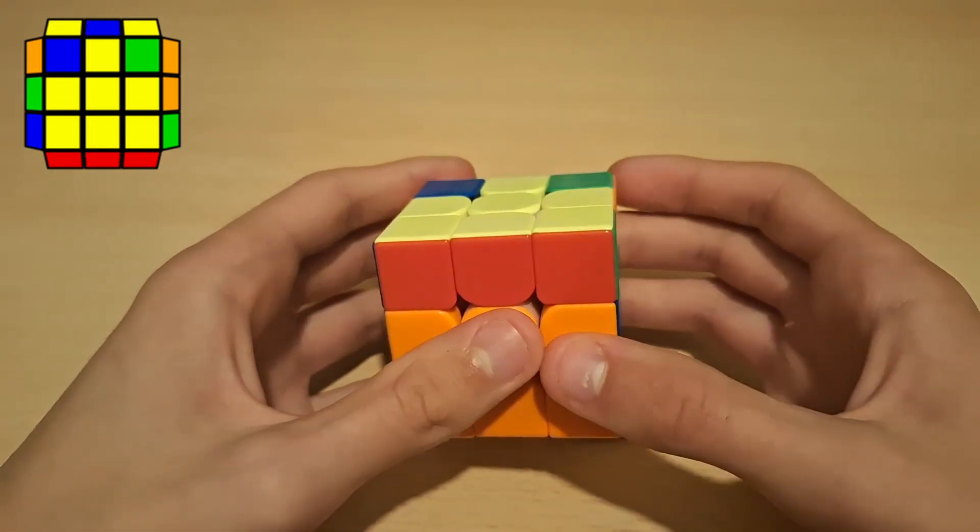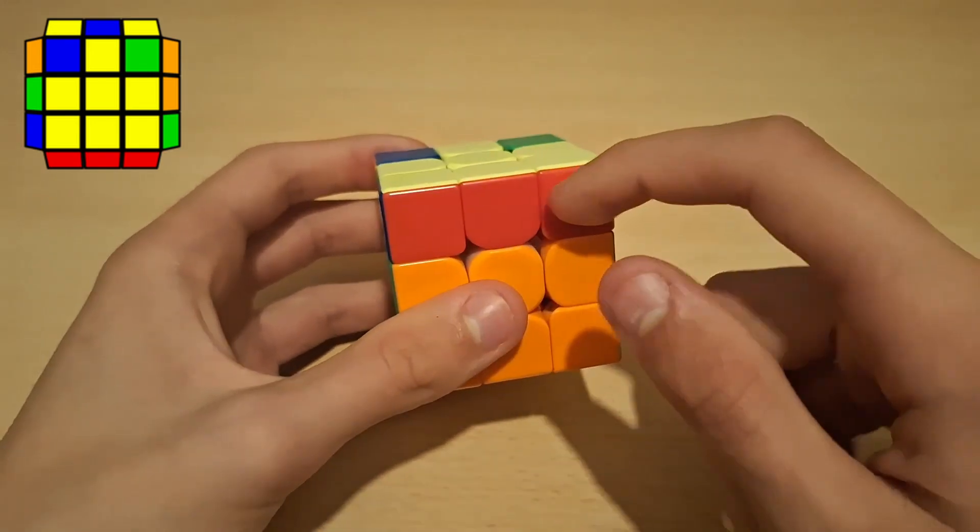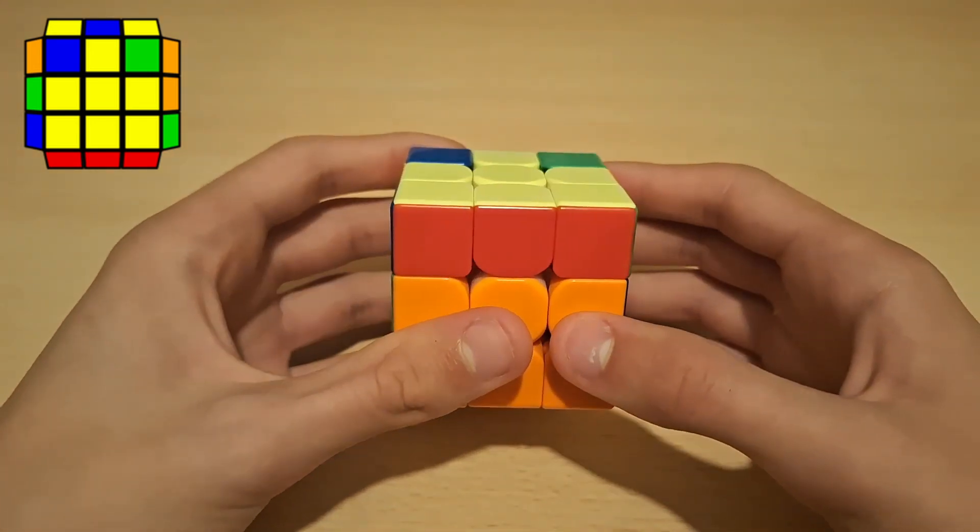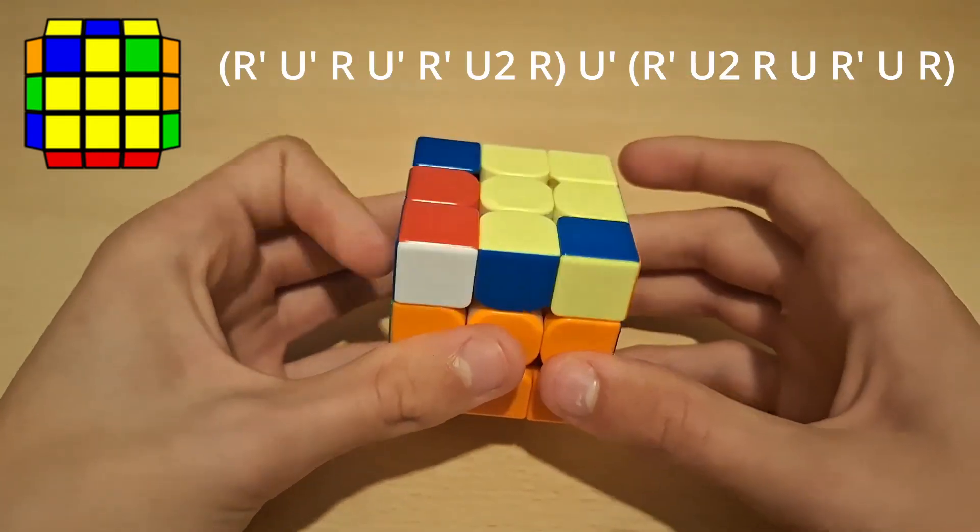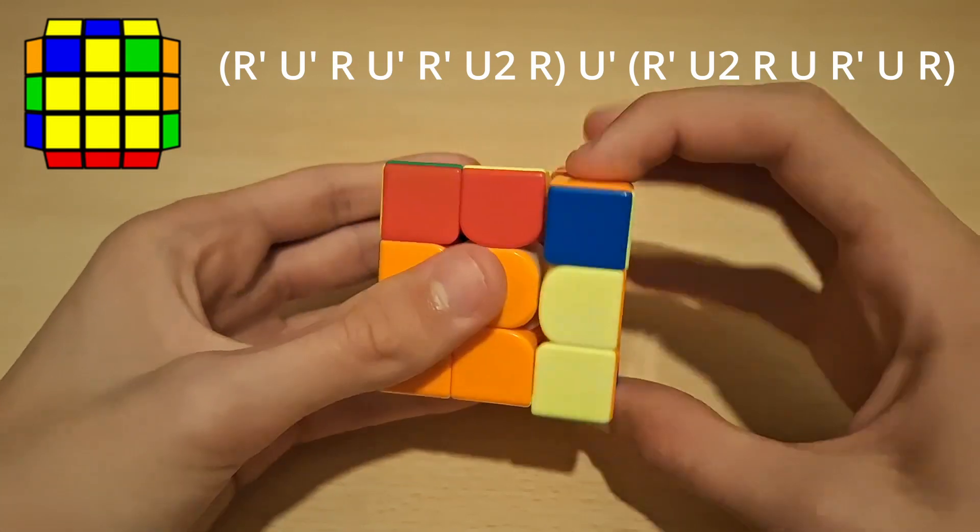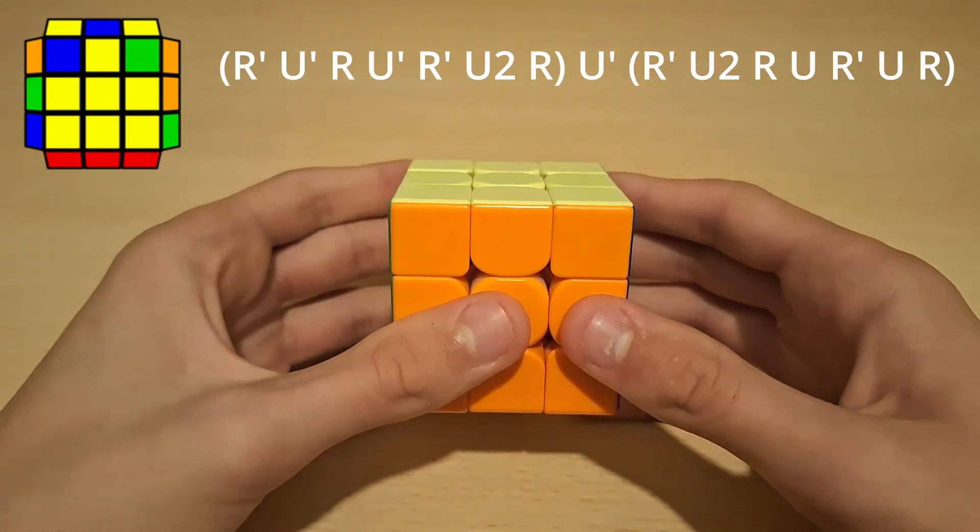Alright so now for this ZBLL. So how I recognize this is pretty much just this big block here and then this block on the right. And how I execute this is first of all back sune into anti-sune from here. And that solves ZBLL.